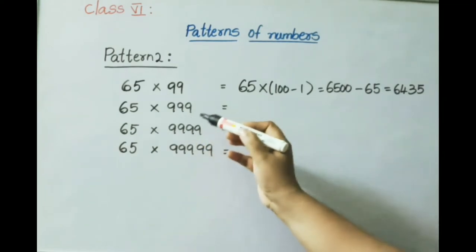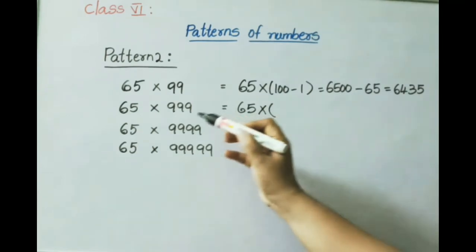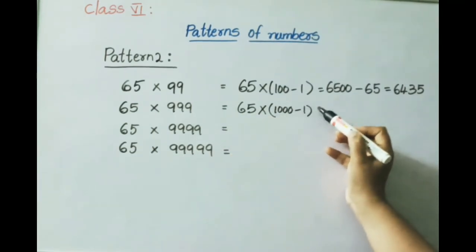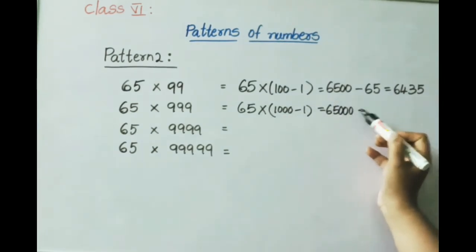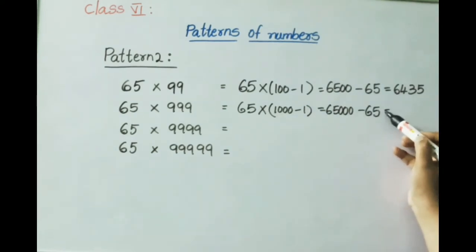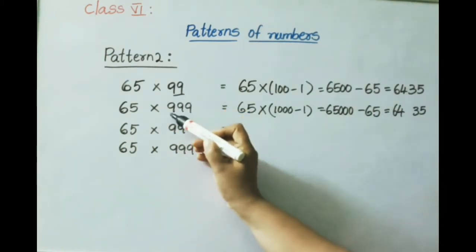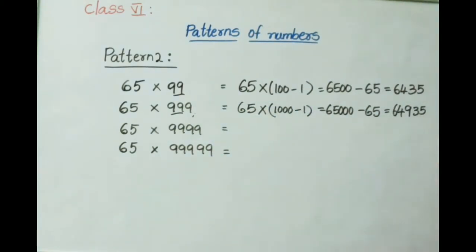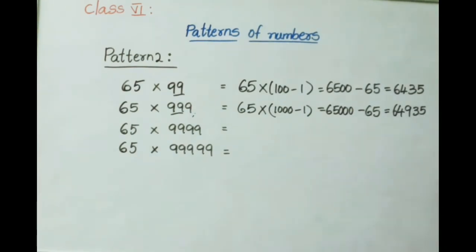Next: 65 into 999. Write 999 as 1000 minus 1. So 65 multiplied by 1000 equals 65000, minus 65 multiplied by 1 equals 65. The base answer digits are 6435. There is one extra 9 in 999 compared to 99, so we write a 9 in the middle to get 64935.